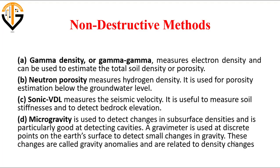There are several other non-destructive techniques. The gamma density (gamma-gamma) technique measures electron density and can estimate total soil density or porosity. Neutron porosity measures hydrogen density and is used for porosity estimation below the groundwater level. Sonic VDL measures seismic velocity and is useful for measuring soil stiffness and detecting bedrock elevation; it is particularly good at detecting cavities. The gravimeter is used at discrete points on the Earth's surface to detect small changes in gravity, called gravity anomalies, which are related to density changes. All these methods are known as non-destructive or geophysical techniques.